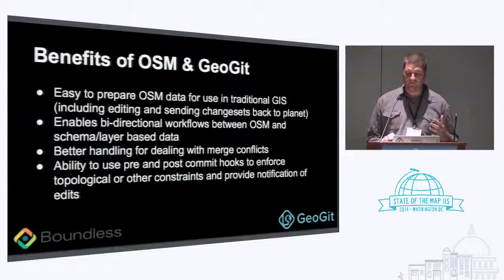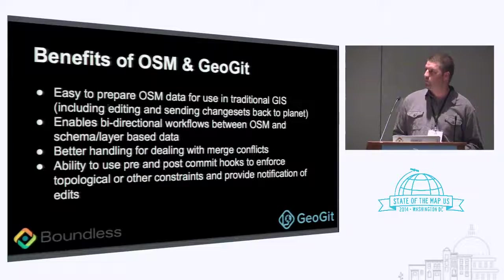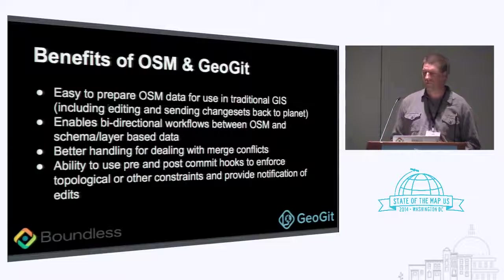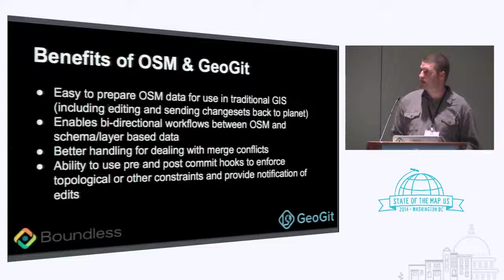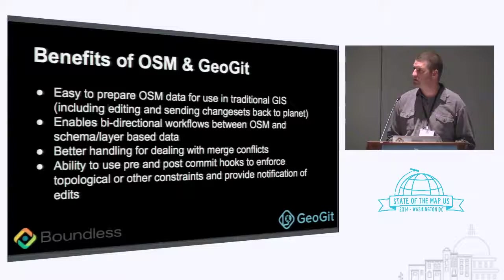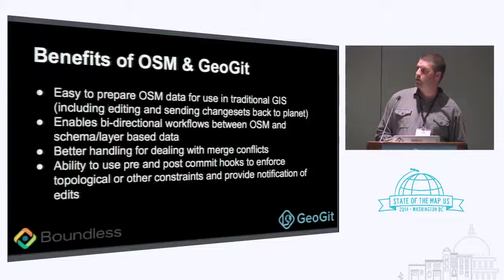The benefits of using OSM and GeoGit together: it's really easy to prepare OSM data for use in traditional GIS, including doing edits and sending changes back to Planet. We're working towards bi-directional workflows between OSM and schema-based layer data. The traditional GIS space doesn't work on the concept of nodes and ways and tags — they work with layers that have a schema. The other big benefit is much better handling for dealing with merge conflicts, which we don't handle well in traditional OSM.